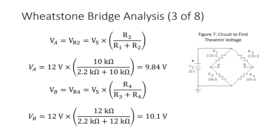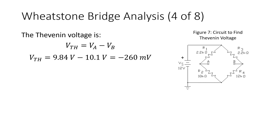We calculate the voltage at node A — which equals V_R2 — using the voltage divider formula: V_source times R2 over R1 plus R2, giving 9.84 volts. The voltage at node B equals V_R4, calculated using the voltage divider formula: V_source times R4 over R3 plus R4, giving 10.1 volts. Therefore, the Thevenin voltage — the voltage from A to B — is 9.84 volts minus 10.1 volts, which equals negative 260 millivolts.